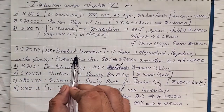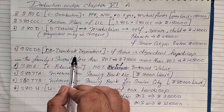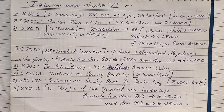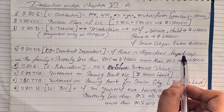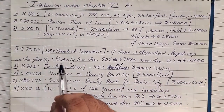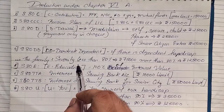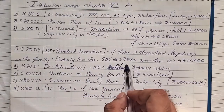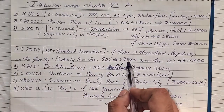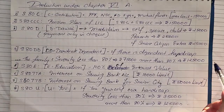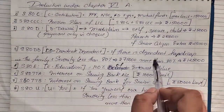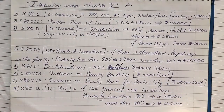Section 80DD — remember 'DD' for dependent diseased. If there is a dependent handicapped person in the family, and the severity is less than 80%, you can get a deduction of 75,000 rupees. If the severity is more than 80%, you will get 1 lakh 25,000 deduction. The severity level will be mentioned in the question.